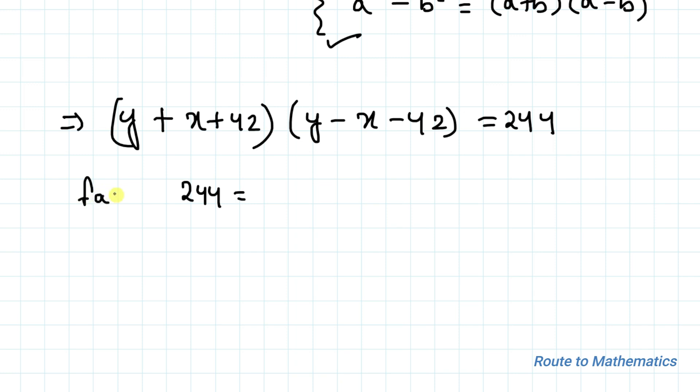The factors of 244: 244 is an even number, that means one of the factors must be even. A parity check shows that if one of them is even, then both must be even. So the factors must be 2 multiplied with 122.